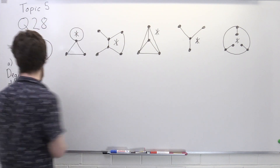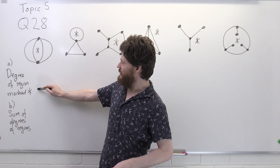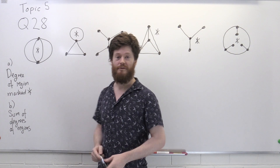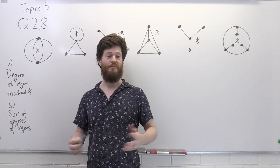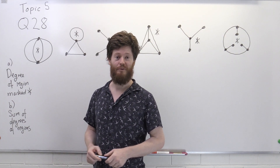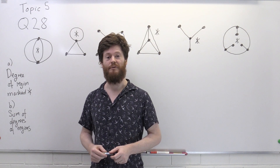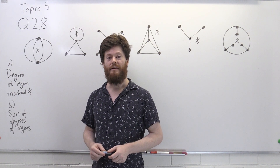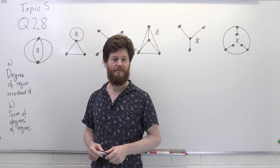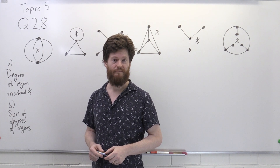The first part of the question says: find the degree of the region marked by this asterisk. If you've got a region, what is its degree? The answer is that the degree is equal to the number of edges in the boundary of the region.